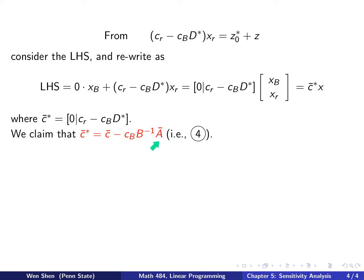Now we claim that c-bar star equals c-bar minus cB B inverse A. That is exactly claim number four. To show that, indeed, we just need to carry out some computation. Let's start from here, and the goal is to show that it gets this expression. So c-bar minus cB B inverse A, what does that equal to?